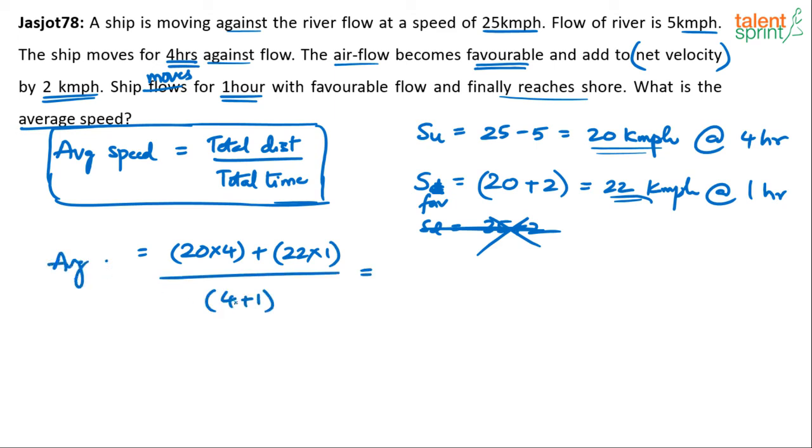So 80 plus 22, 102 by 5, it should be 20.4 kilometers per hour. 20.4 is the answer. 20.4 kilometers per hour. Options are not there, but whatever that is, whichever option it is, 20.4 will be the answer.